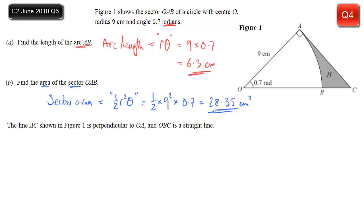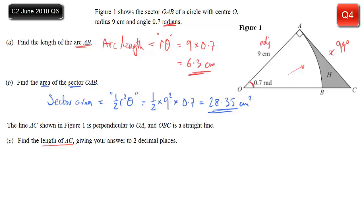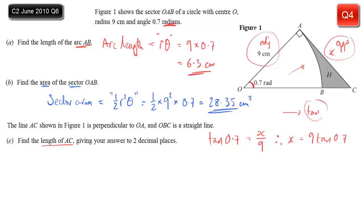Next we're told that line AC is perpendicular to OA - already visible in the diagram with the right angle symbol. We're asked to find the length of AC. This turns out to be a simple trigonometry question. If we label that side x, considering the angle 0.7 radians, x is the opposite side, and the 9cm side is the adjacent. Given we know the adjacent and want the opposite, that tells us to use tan. So tan(0.7) equals x divided by 9. Multiply by 9, and x is 9 tan(0.7), which comes to 7.58cm rounded to two decimal places.